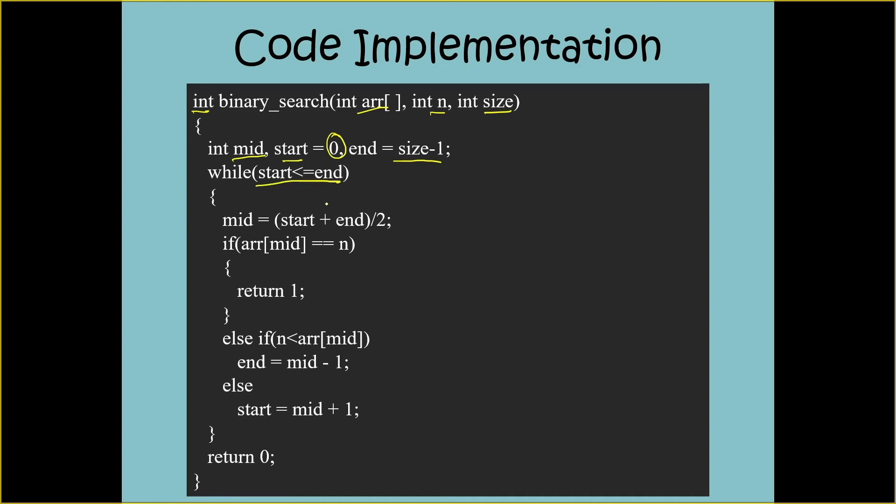This condition will be violated only in one situation: when the element is not available in the array and start will exceed the value of end, and thus will return 0 from the function. Inside the loop my first statement is to calculate the middle position.